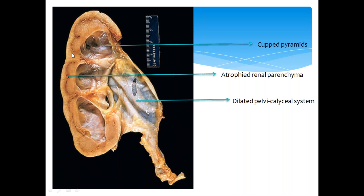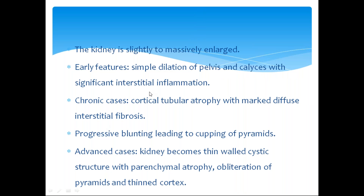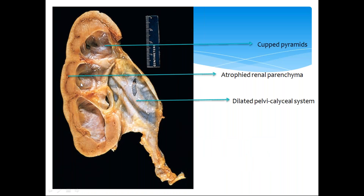The morphology in summary: atrophy of renal parenchyma, cupped pyramids, and dilated pelvicalyceal system. The kidney is completely transformed into a cystic space. In chronic cases there is cortical tubular atrophy with marked interstitial fibrosis, progressive blunting leading to cupping of pyramids. In advanced cases, completely thin-walled cystic structures with parenchymal atrophy, obliteration of pyramids, and thinned-out cortex — and a dilated pelvicalyceal system.